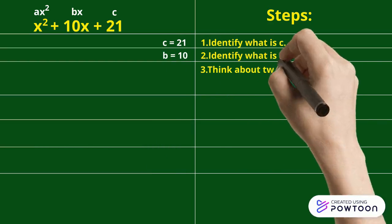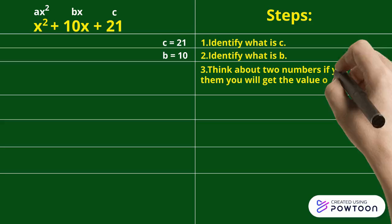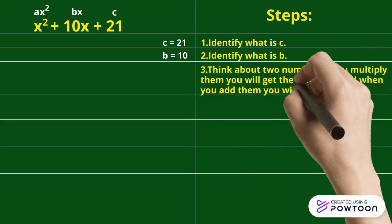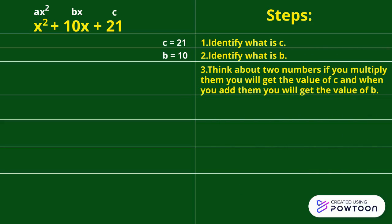Third step, think about two numbers. If you multiply them, you will get the value of C, which is 21. And when you add them, you will get the value of B, which is 10.